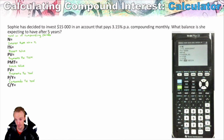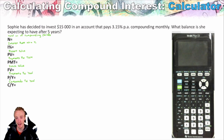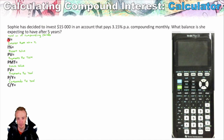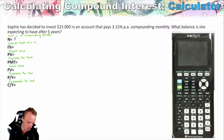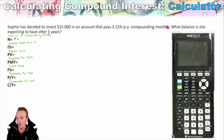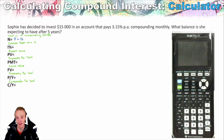In this question, Sophie has decided to invest $15,000 into an account that pays 3.15% per annum compounding monthly, and we want to know the balance she expects to have after five years. With all these questions, I recommend working out what information you have and which value you're actually trying to find. N is the total number of compounding periods — not just time, but the total number of compounding periods.